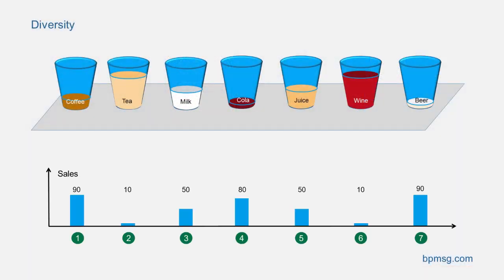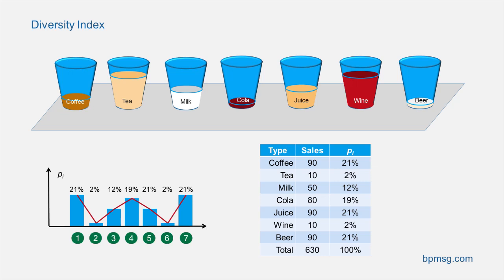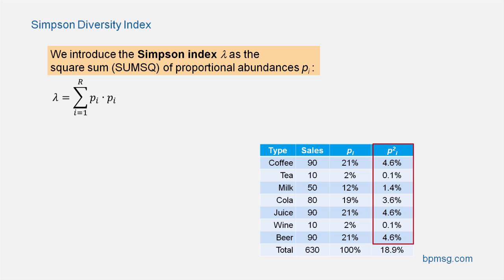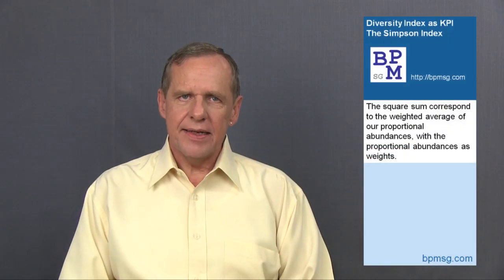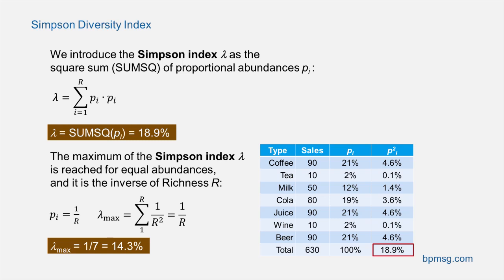How could this be done? Let's take a more realistic example with our drinks. We have a mixed distribution — quite a high portion of coffee, cola and beer, some milk and juice, and only a low portion of tea and wine. As before, we calculate the proportional abundances. In addition, we calculate the square of the proportional abundances and introduce the Simpson index as the square sum of our proportional abundances — lambda — which is in our example 18.9%. The square sum corresponds to the weighted average of our proportional abundances with the proportional abundances as weights. The maximum of the Simpson index, equal distribution in all categories, is 1 over richness, and increases for decreasing evenness of the distribution.